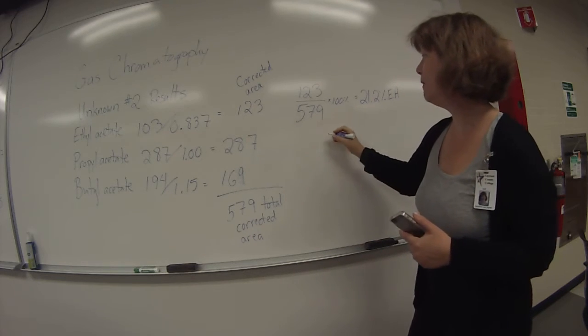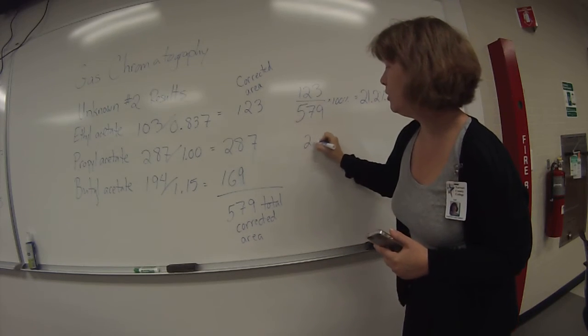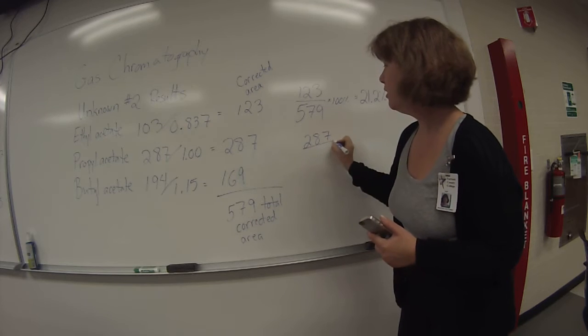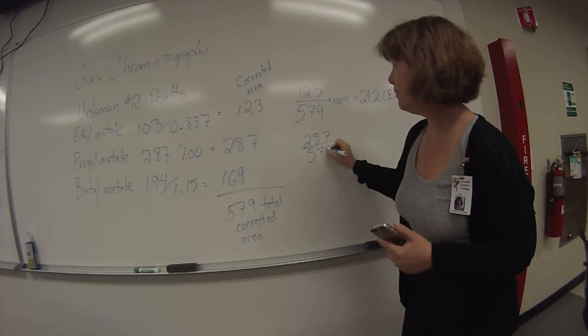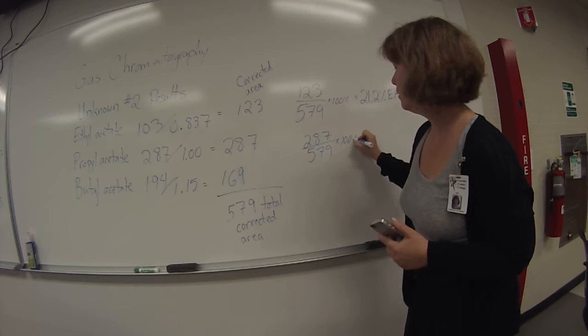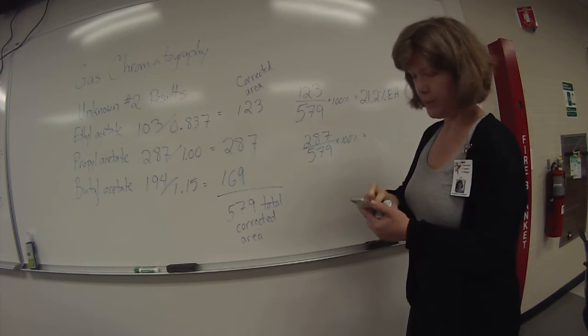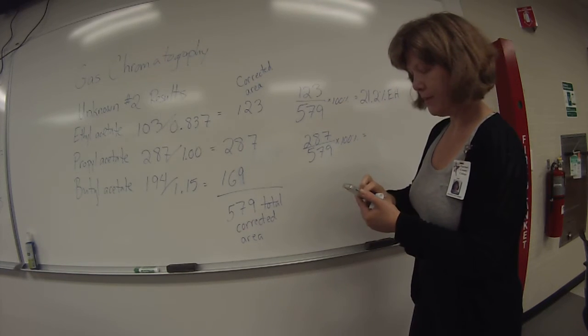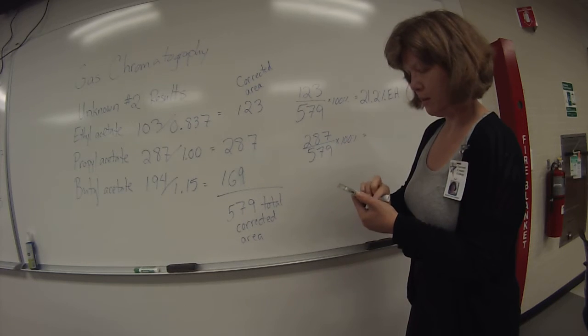Propyl acetate, the percent is 287 divided by the total, 579 times 100%, so that's 287 divided by 579.